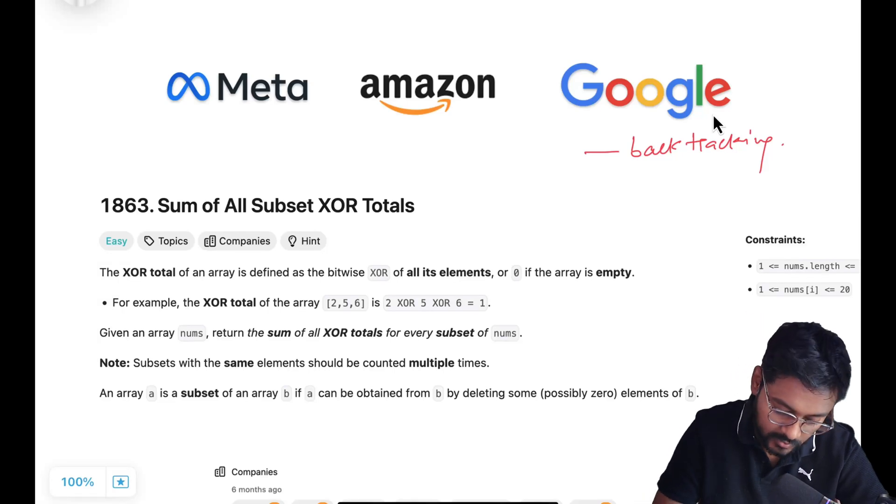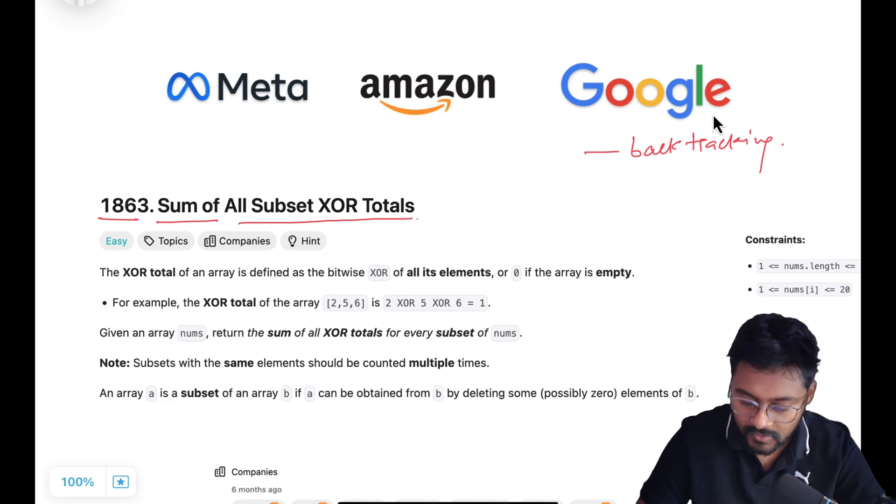Hey everyone, welcome to Code Harmony. Today we are going to solve LeetCode problem ID 1863: Sum of All Subset XOR Totals.